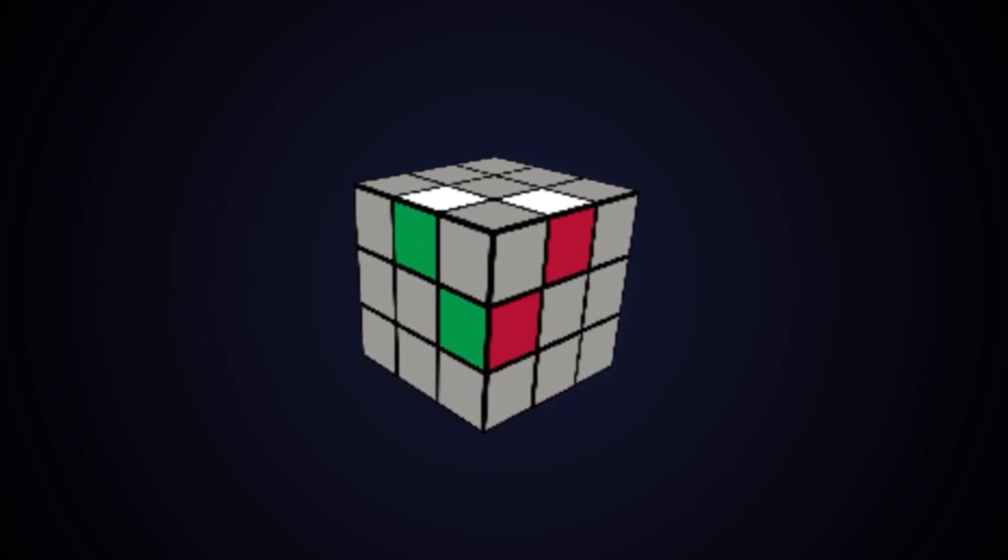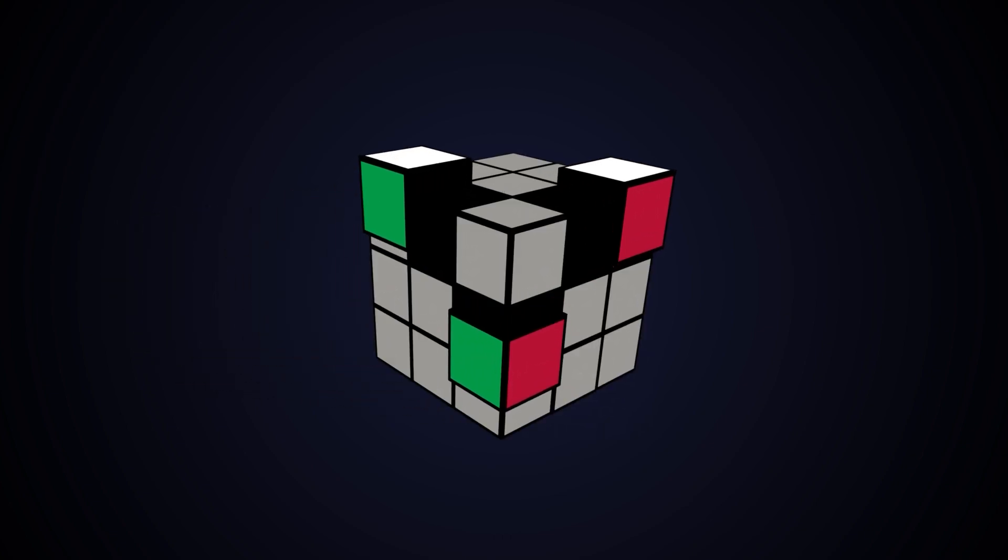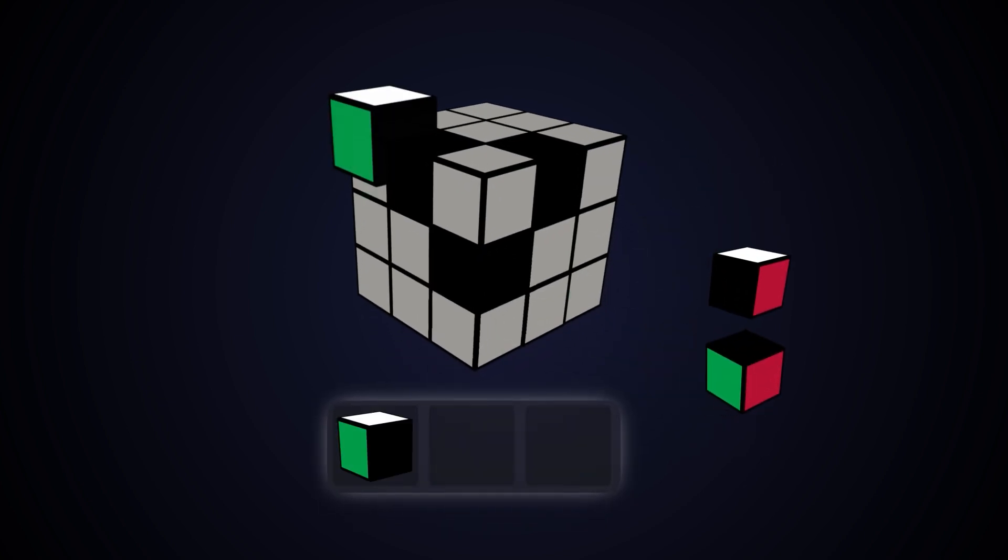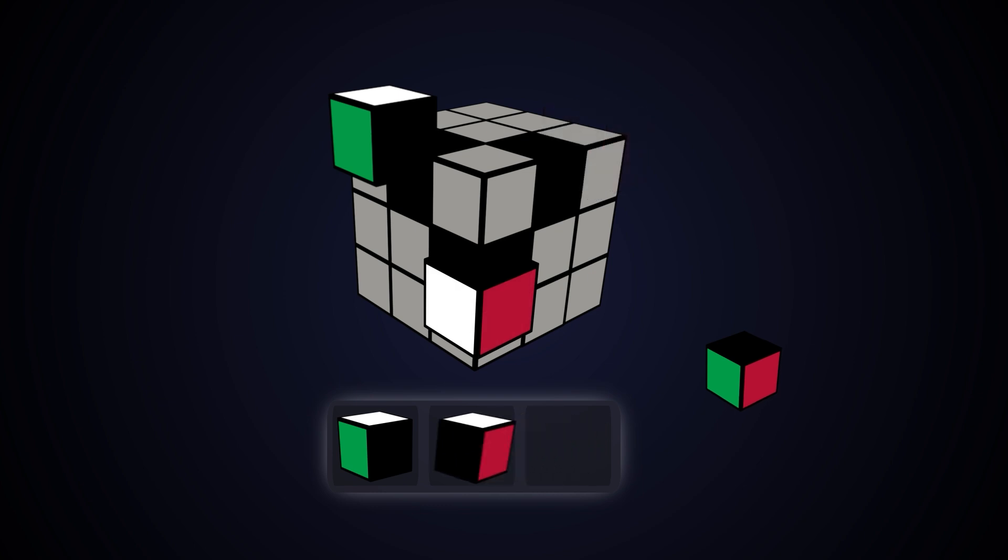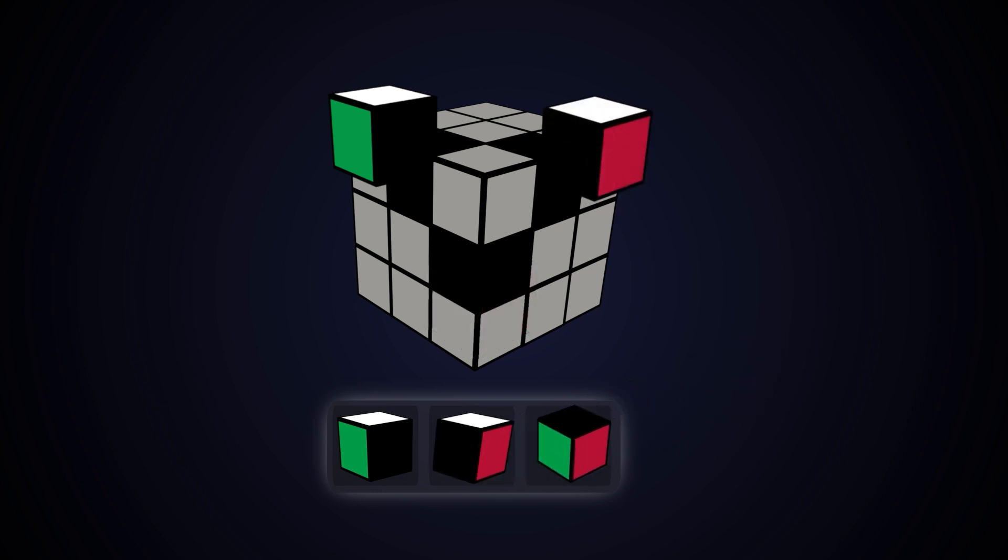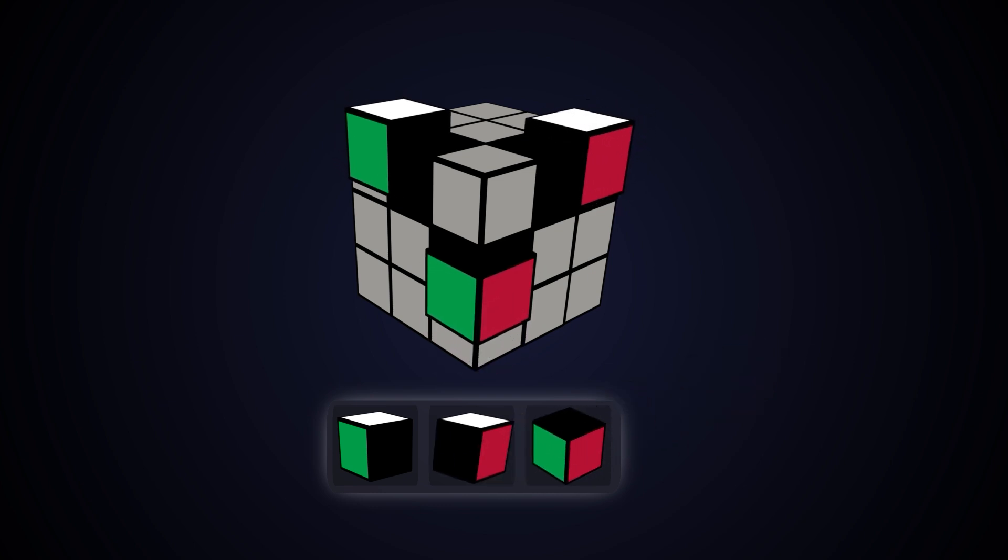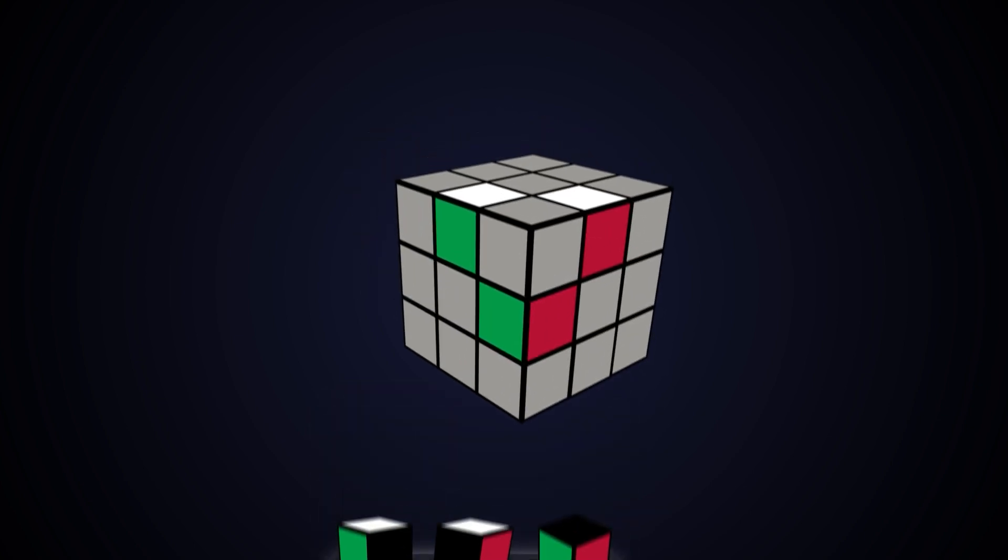Next we figure out how many ways we can place each edge if we swap them around. To do this, let's take them all out. From here there are three ways we can place the first edge, two for the second one, and of course just one for the last one.